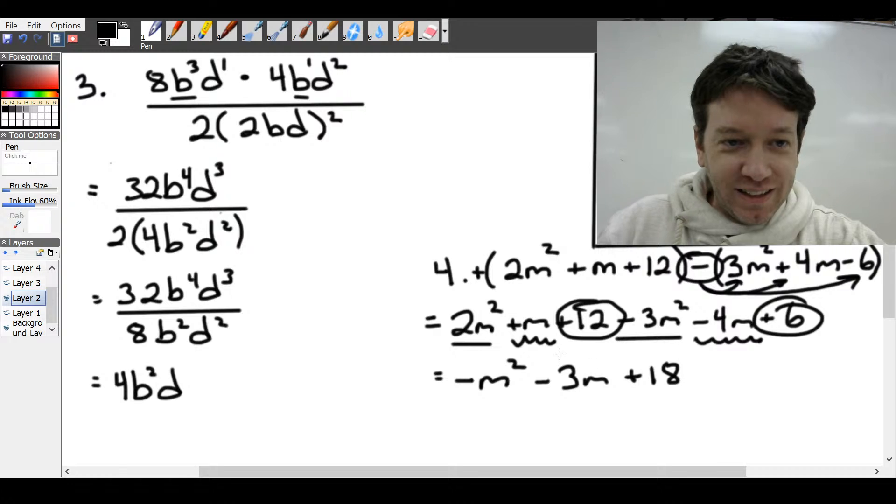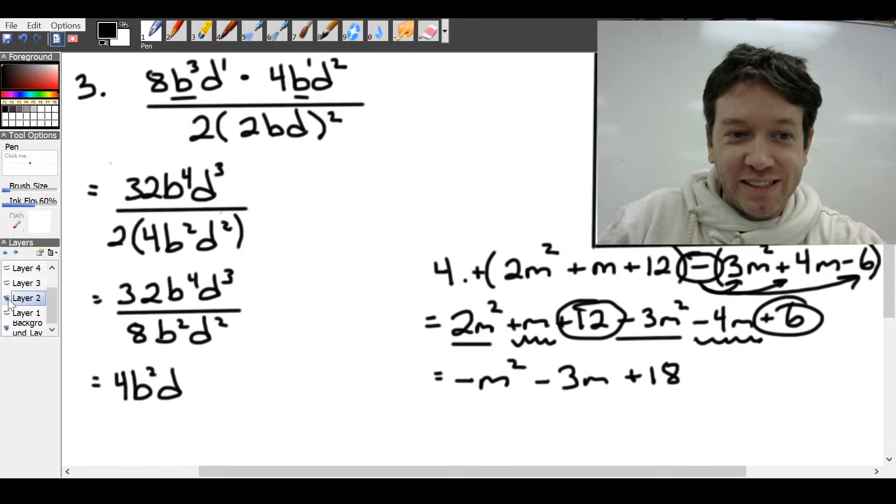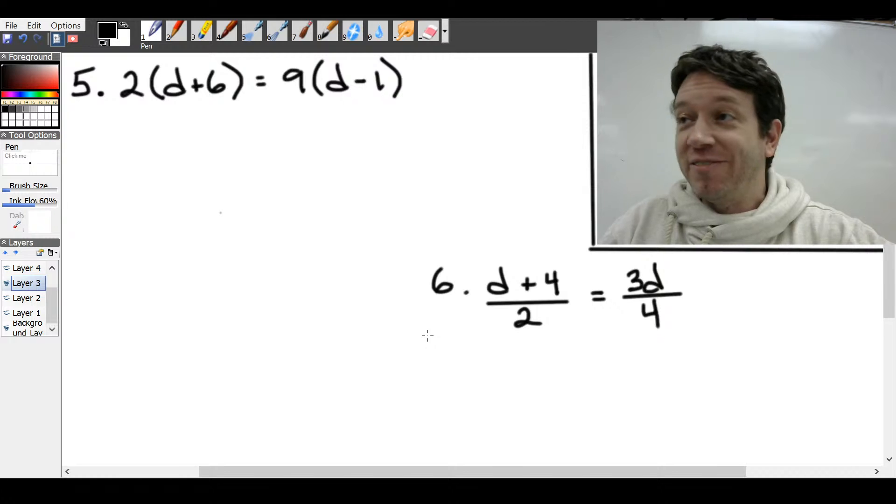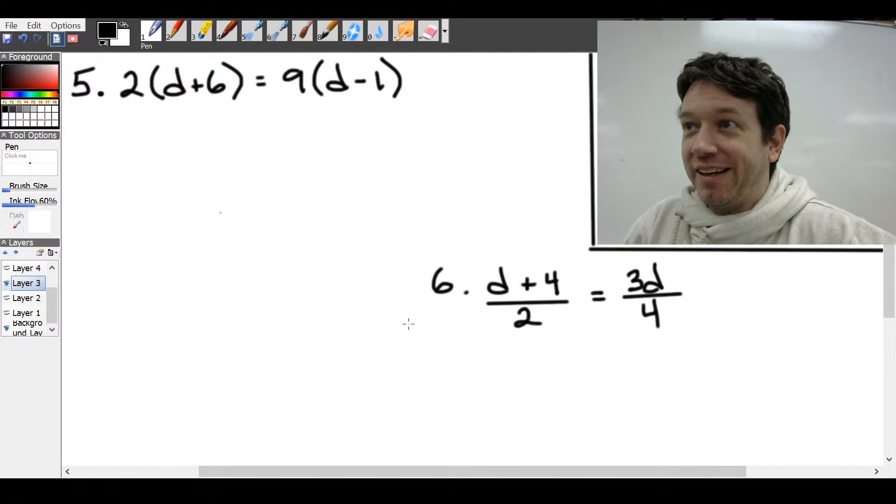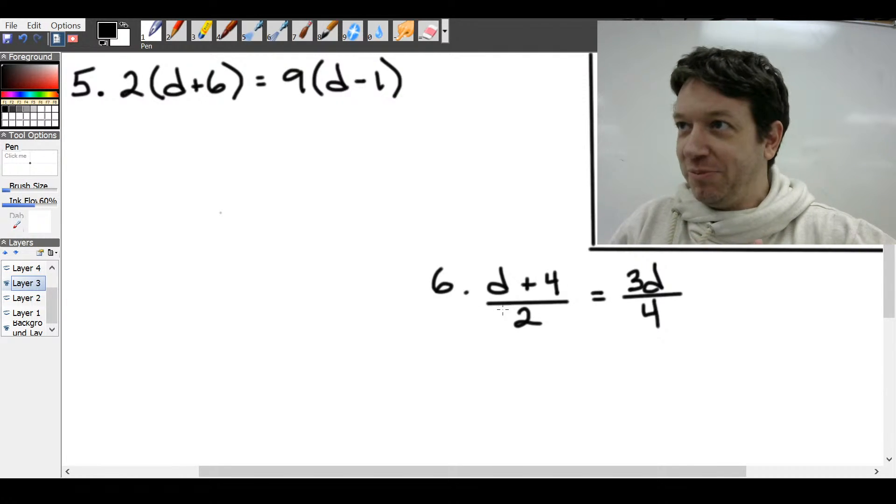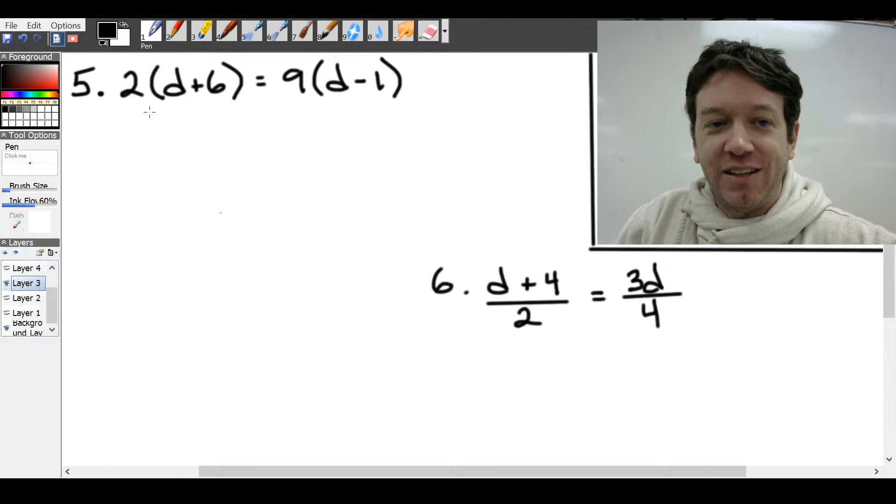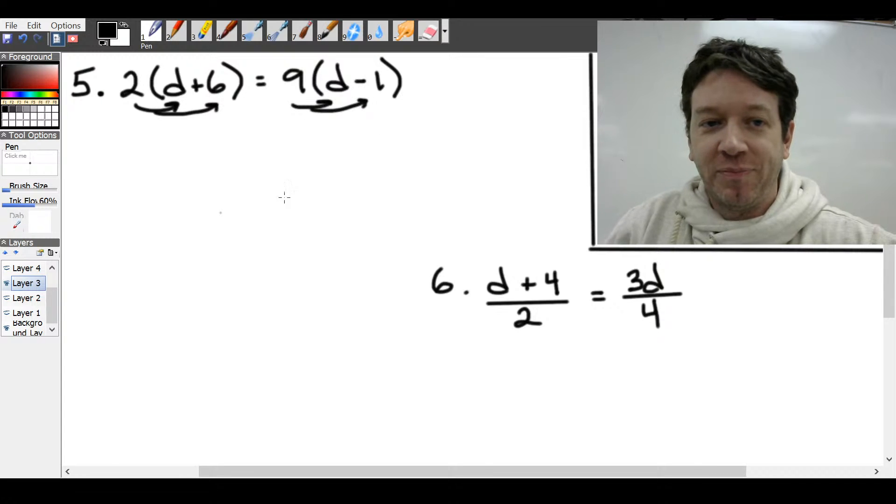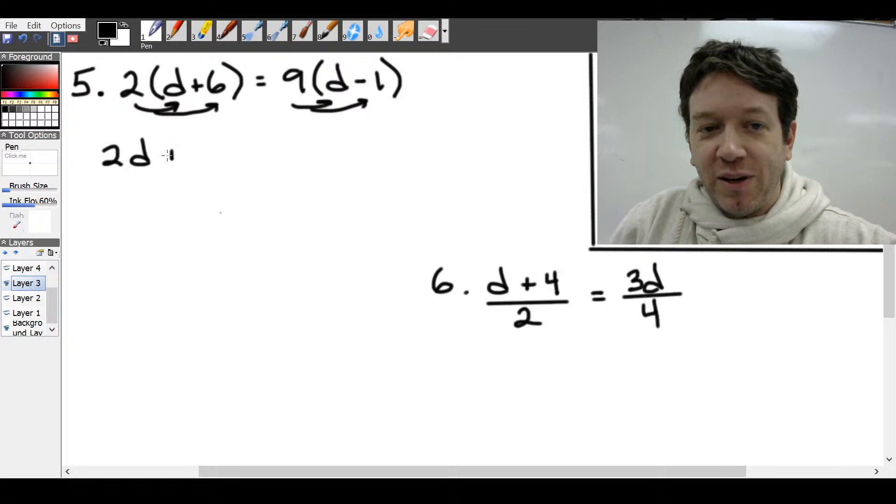All right. Let's go to the next question if everyone's okay. 5 and 6. We're going to be solving equations. So similar steps, but now we have an equation. So first question 5, we need to distribute that 2 into the bracket and do the same for the 9. So this will give us 2d plus 12 is equal to 9d minus 9.